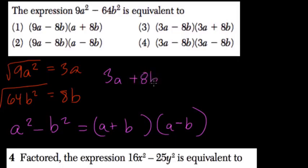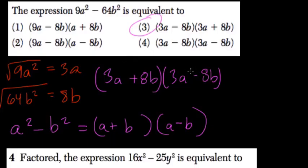So here we have 3a plus 8b, right, times 3a minus 8b. This is called the difference of squares problem, and the answer I pick is choice 3.